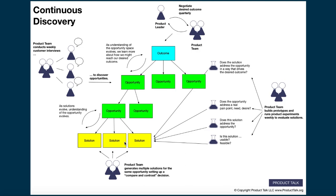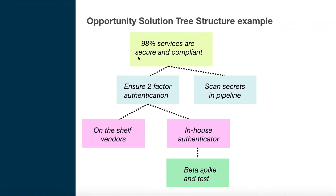This tree structure helps businesses take the right decisions about which opportunities to focus on first, and helps teams prioritize opportunities that indirectly help achieve the outcome. It also acts like a product discovery roadmap — everyone gets to see what gets built and there is alignment and visibility across the team on what is happening in the product discovery phase.